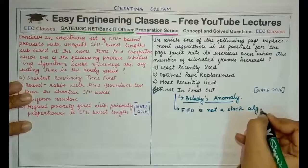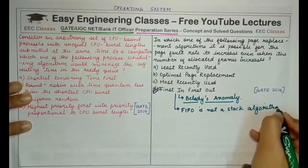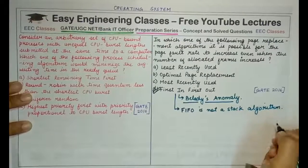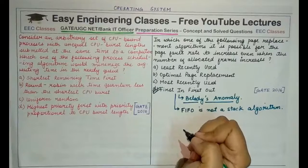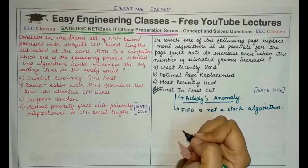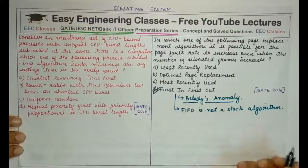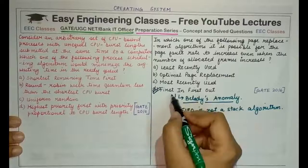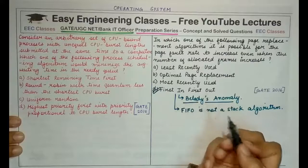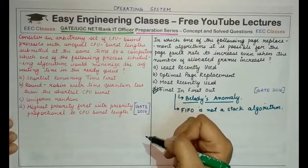This is extra information you must know because sometimes the question is twisted and you need to know the reason behind certain phenomena to answer it — it may be helpful in other questions. The answer to this question is the First In First Out algorithm.